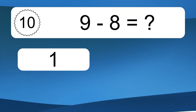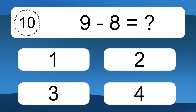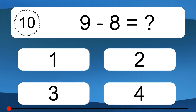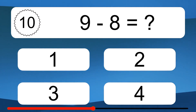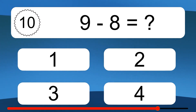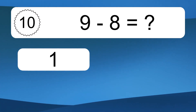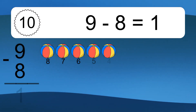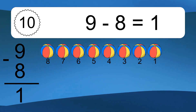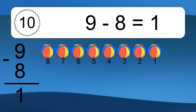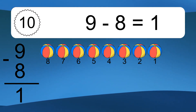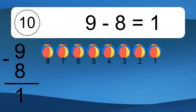9 minus 8 equals what? 9 minus 8 equals 1. Let's count it: 8, 7, 6, 5, 4, 3, 2, 1.